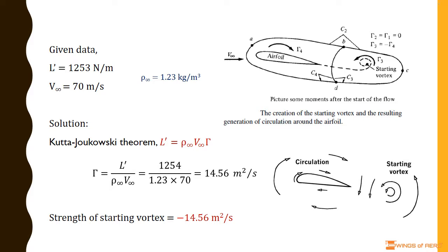Referring to the figure, the steady-state starting vortex has strength equal and opposite to the circulation around the airfoil. Hence, the required strength of starting vortex is -14.56 square meters per second.